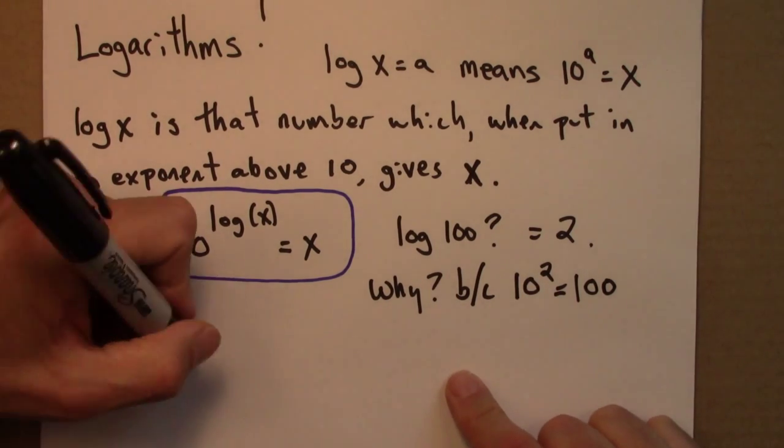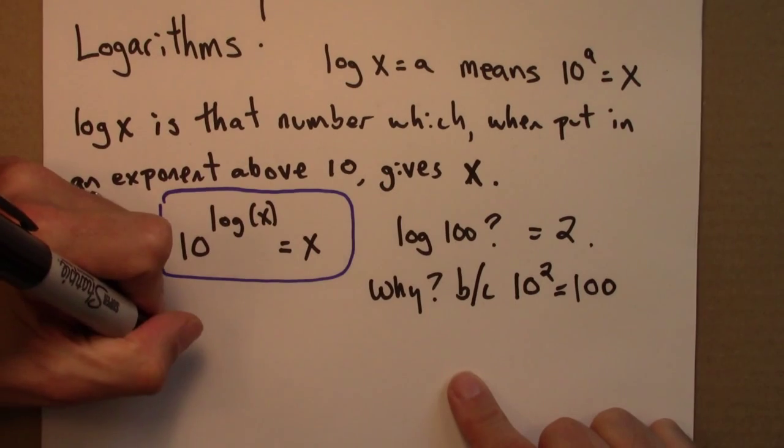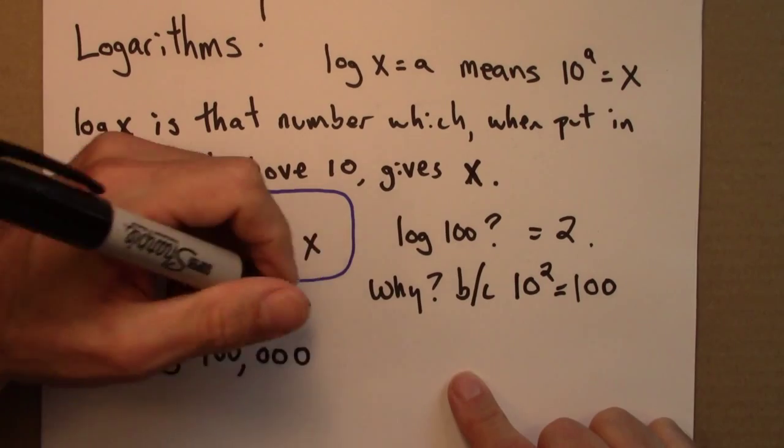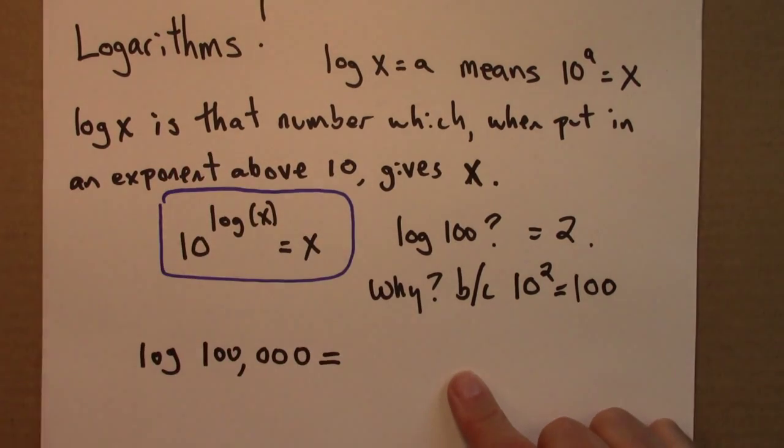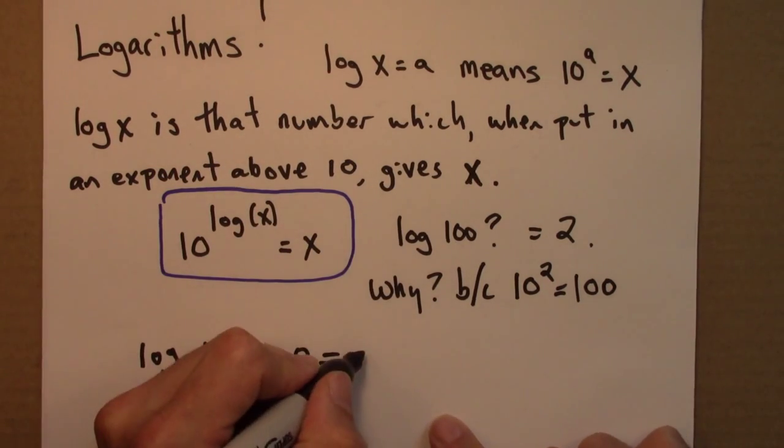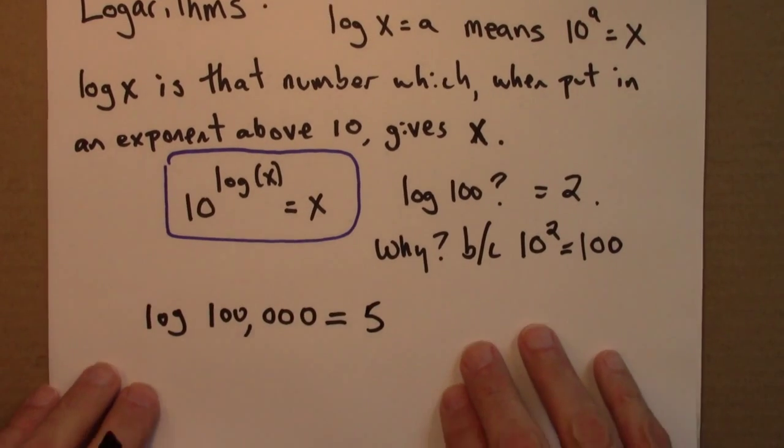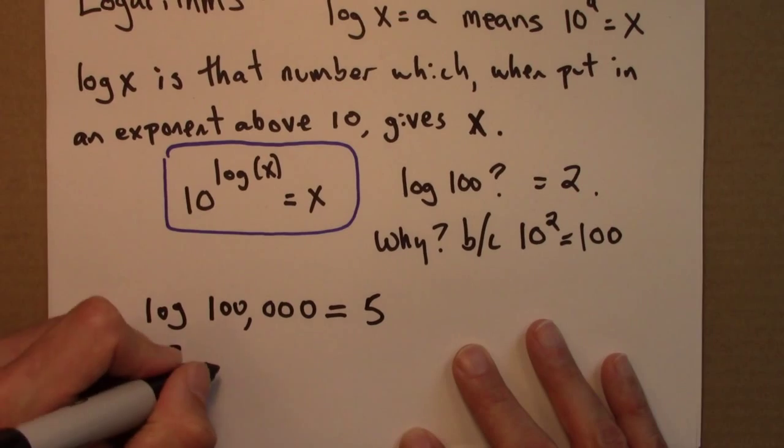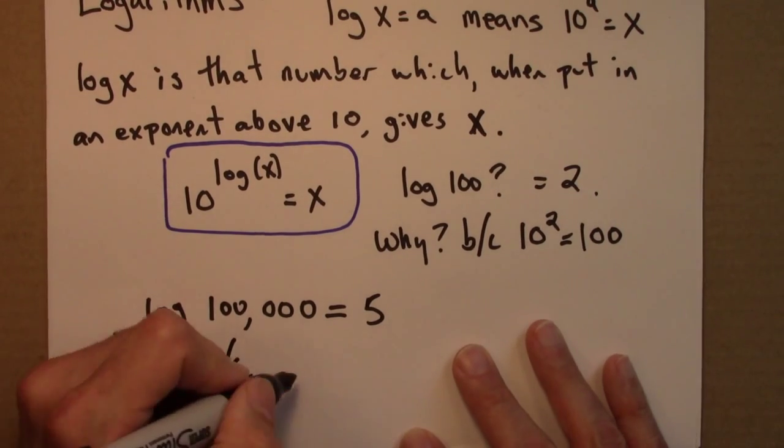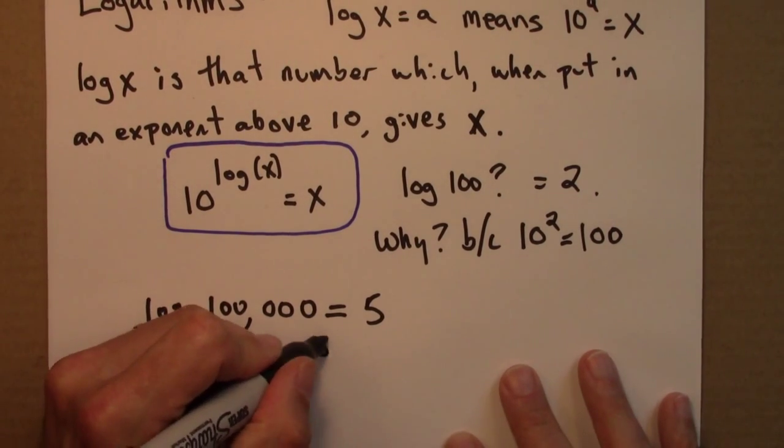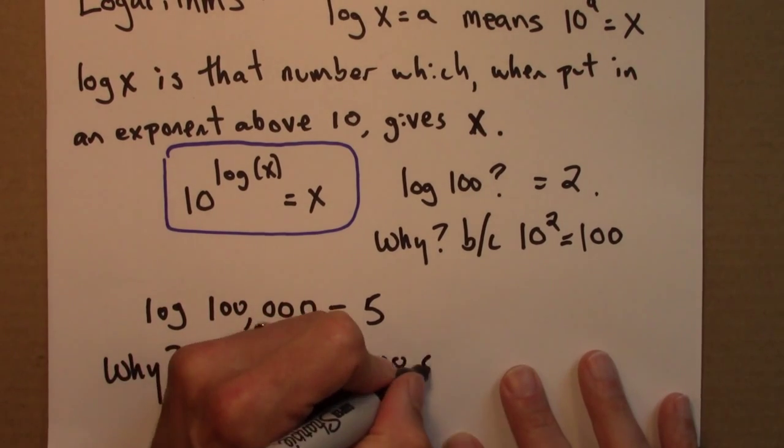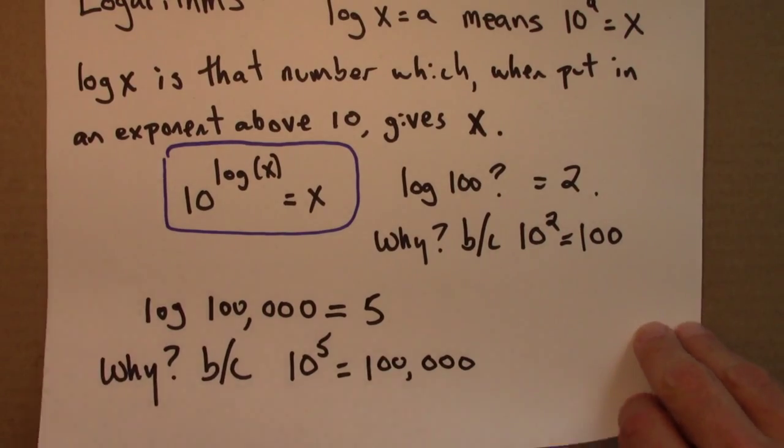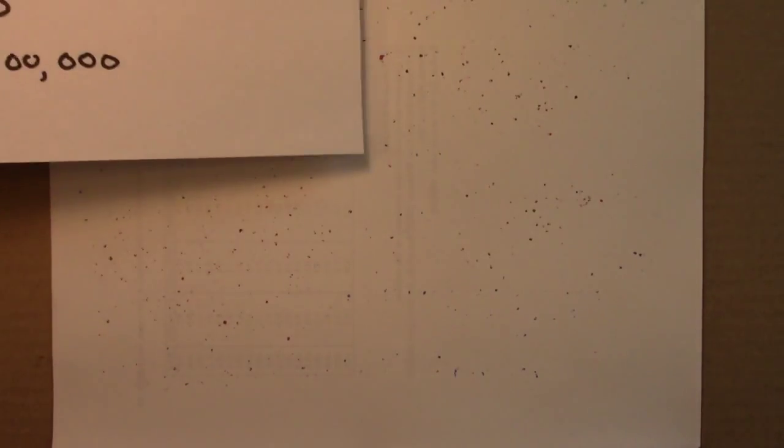We could do another example. Log of 100,000, what does that equal? I claim that equals 5. Why? Because 10 to the 5 is 100,000. Let's do one more example.